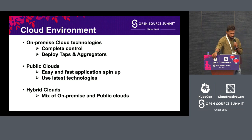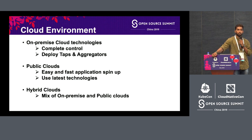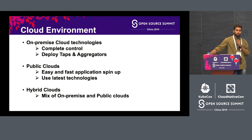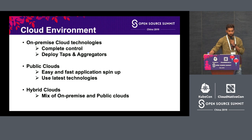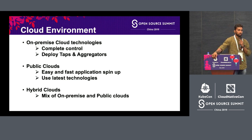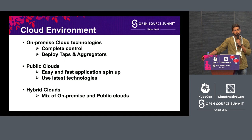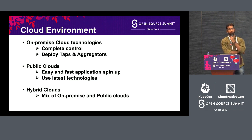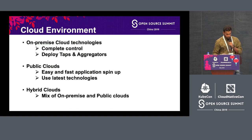Public clouds are easy and fast for spinning up applications — for example, if you own a website and want to double the load, you can easily spawn more instances on public clouds. On-premise can do the same but it's a little less fast. In hybrid cloud, an organization with heavy traffic for only one month of the year doesn't need on-premise infrastructure all year — they can use the public cloud for just that month.